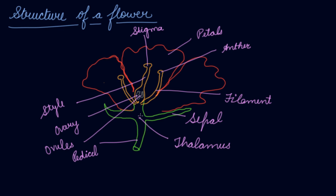The uppermost part of the pedicel is wider and is known as the thalamus. On top of the thalamus, the different parts of the flower are arranged in rings or whorls. The outermost ring consists of green leaf-like structures called sepals, which protect the flower when it is still a bud. Next to the sepals are the petals, which are generally brightly colored and scented to attract insects that help in reproduction.